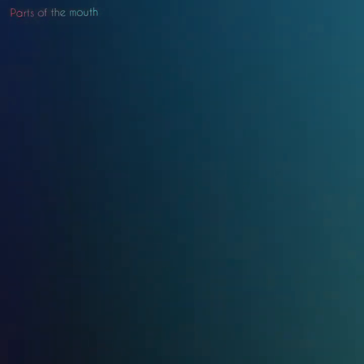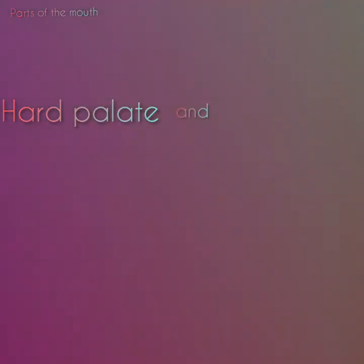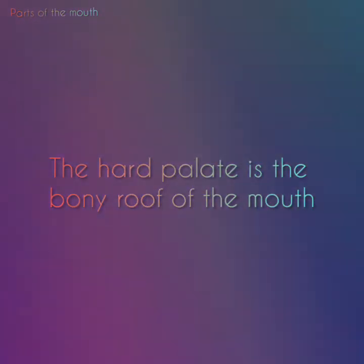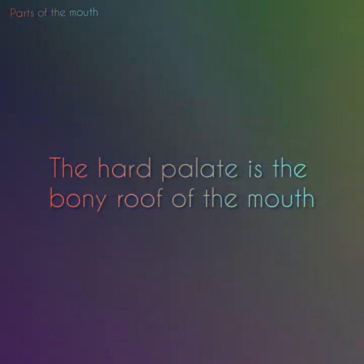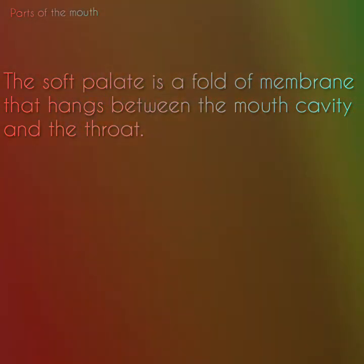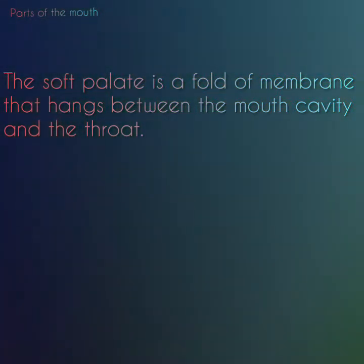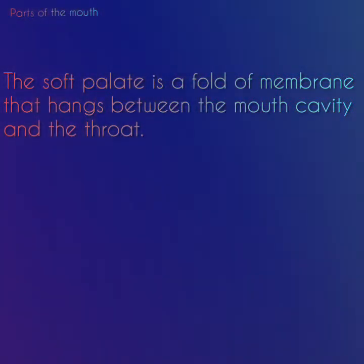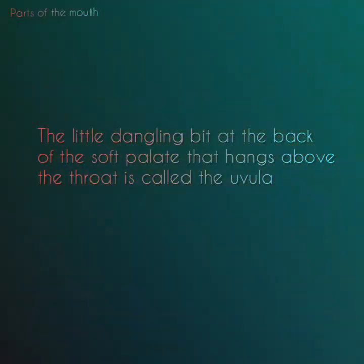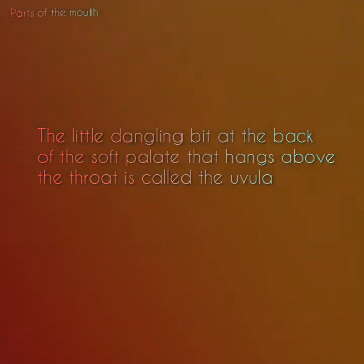There are two types of palates: the hard palate and the soft palate. The hard palate is the bony roof of the mouth. The soft palate is a fold of membrane that hangs between the mouth cavity and the back of the throat. The little dangling bit at the back of the soft palate that hangs above the throat is called the uvula.